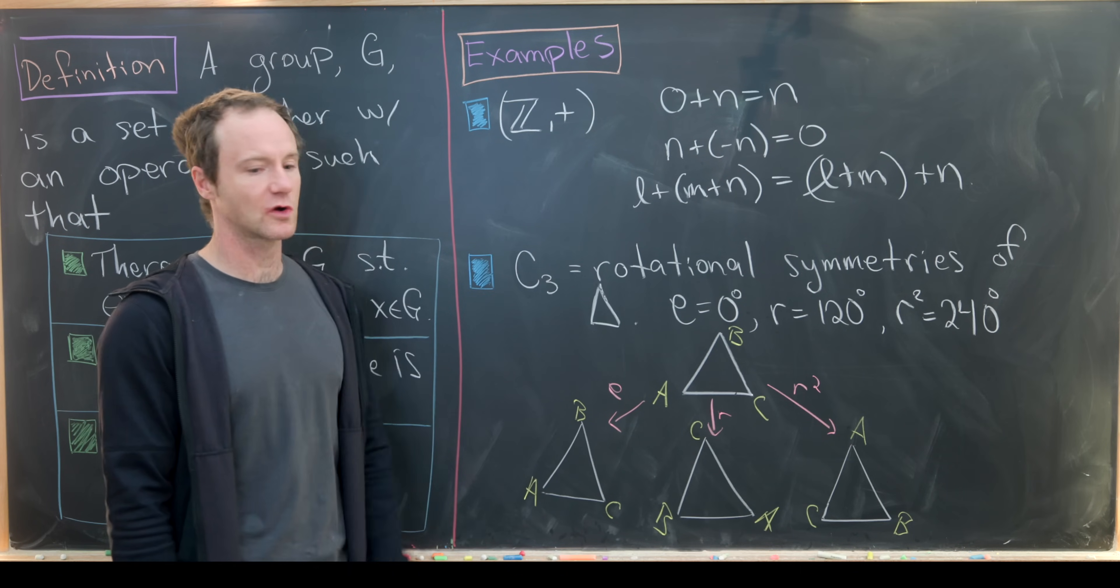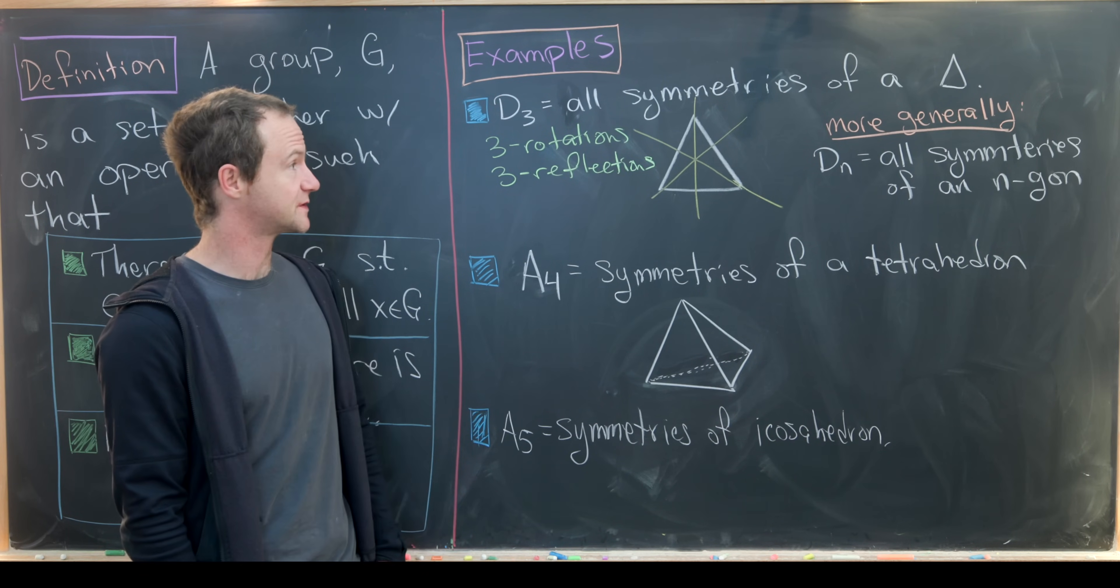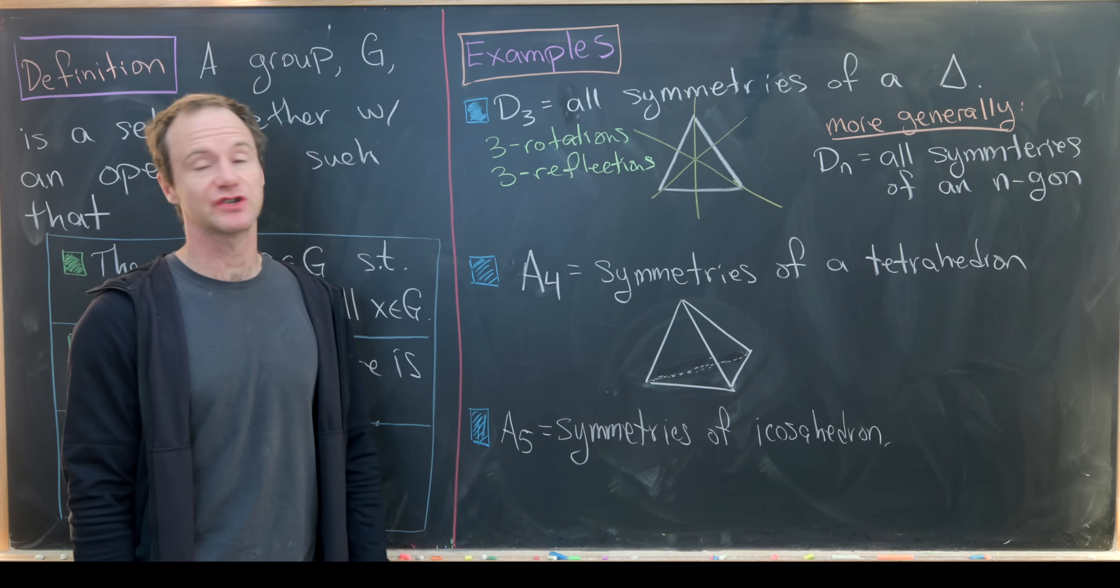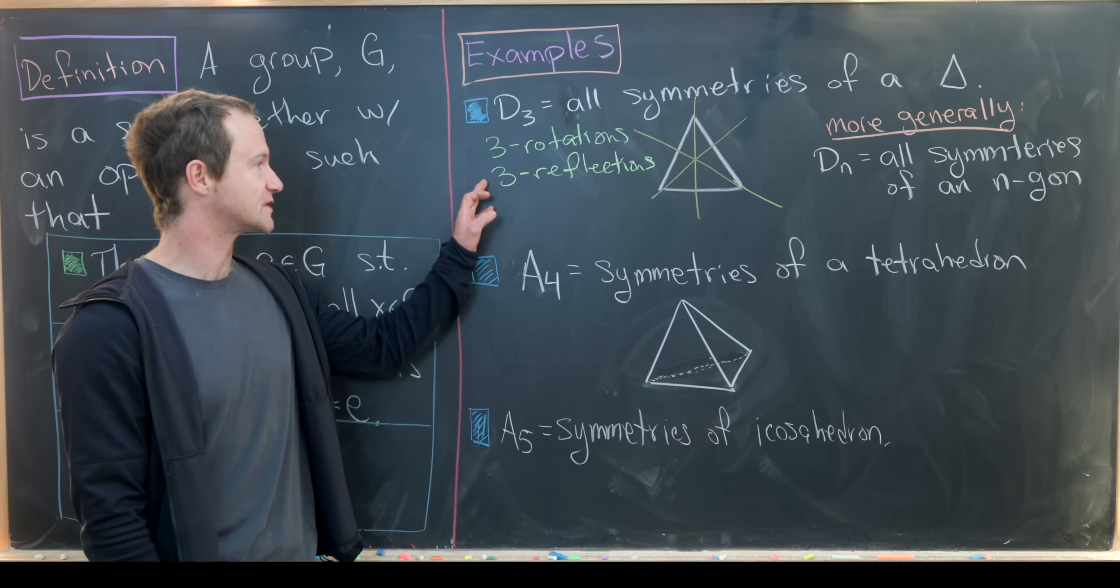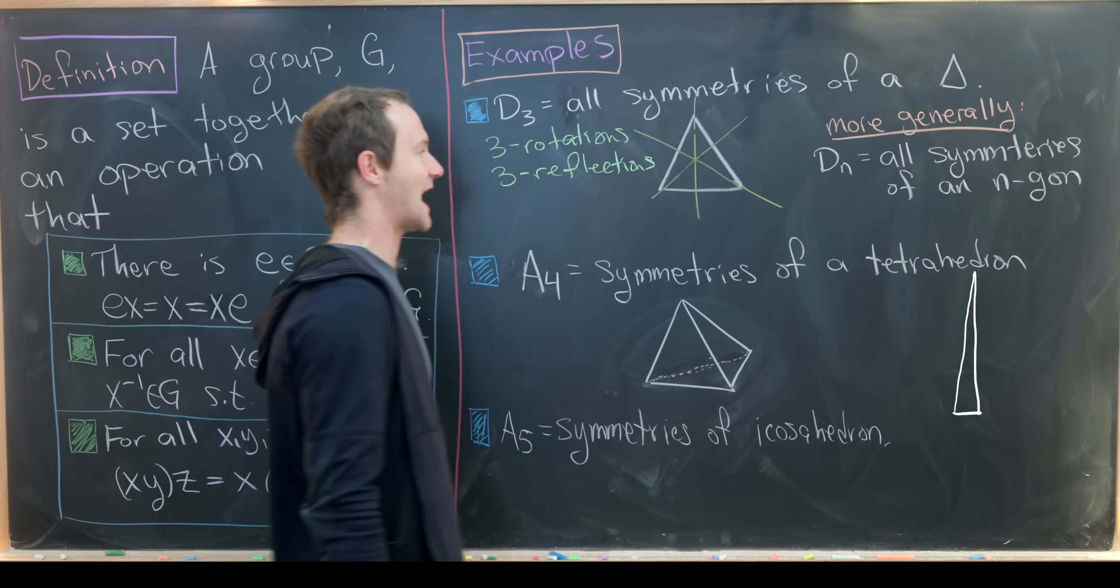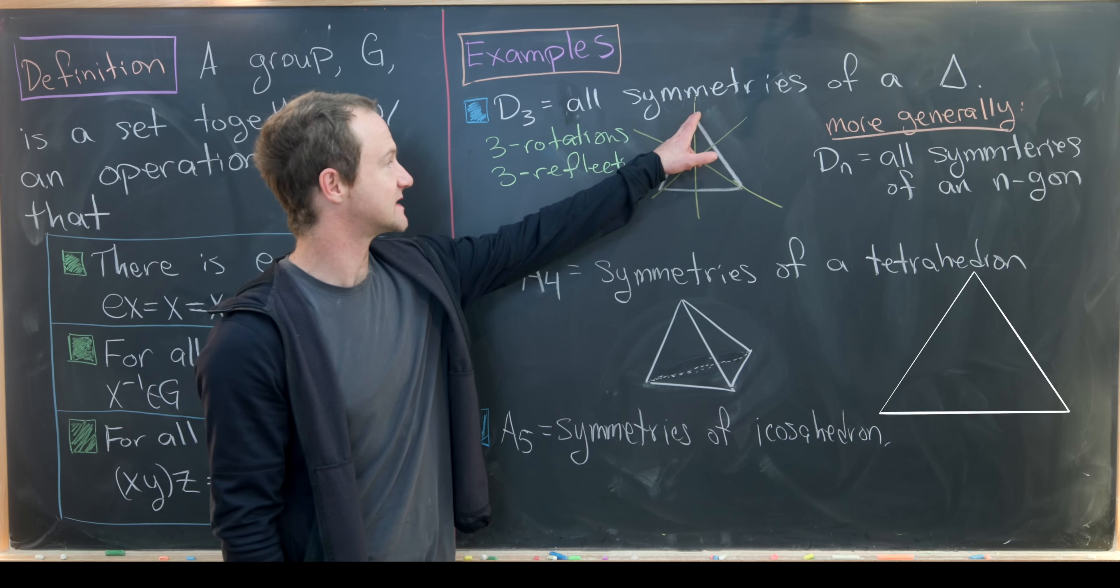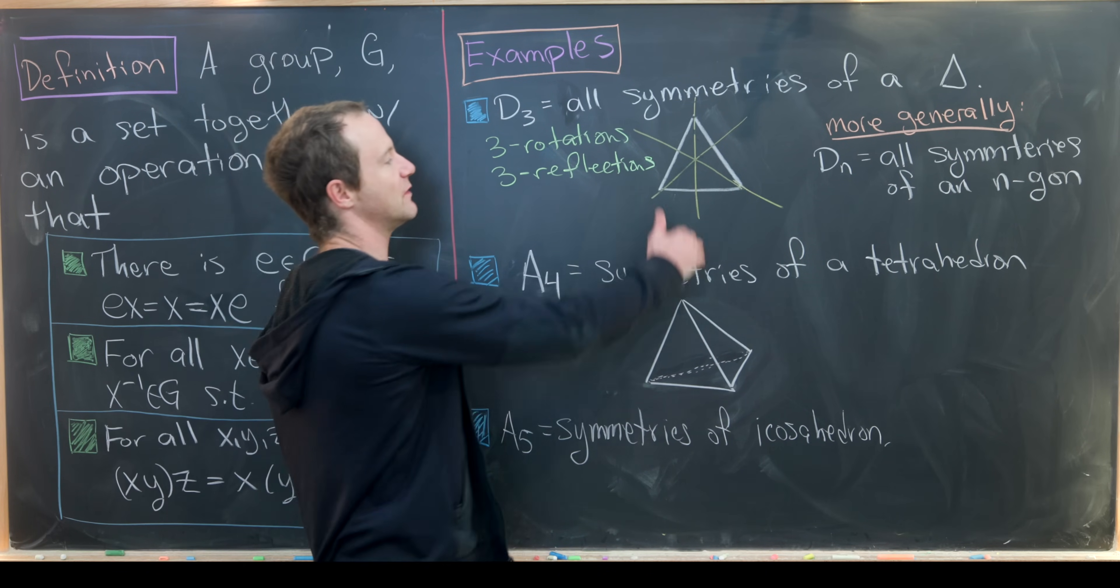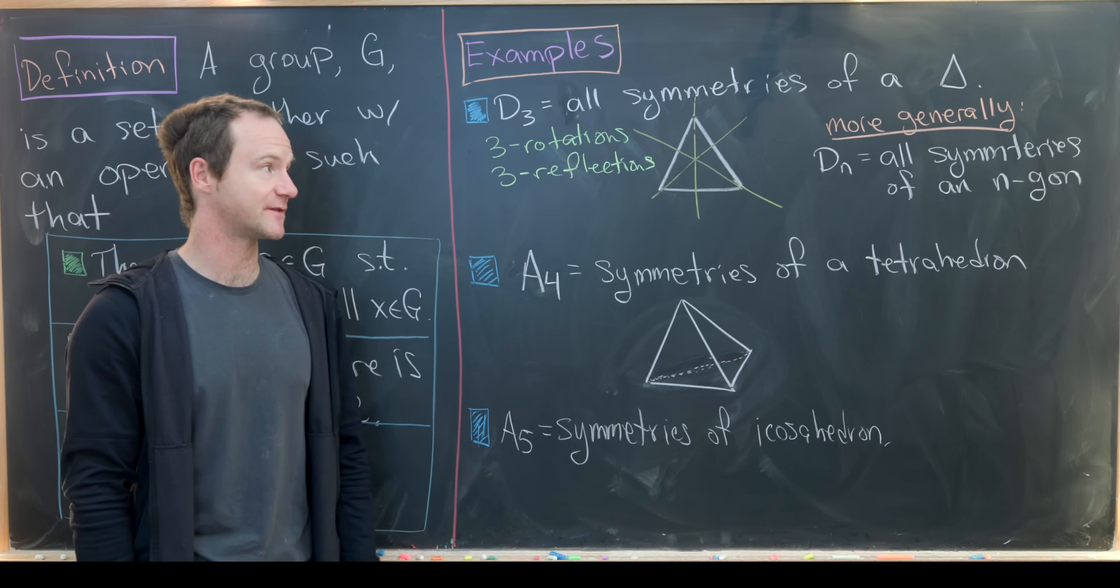Now let's look at a couple of other geometric examples. We've got D3, which is related to C3. This is going to be all symmetries of a triangle, including the three rotations we saw before, as well as the three reflections. We've got these three obvious reflective axes. We could reflect about this vertical axis, which fixes this top vertex and swaps these two base vertices. And we've got similar reflections about those other two lines.